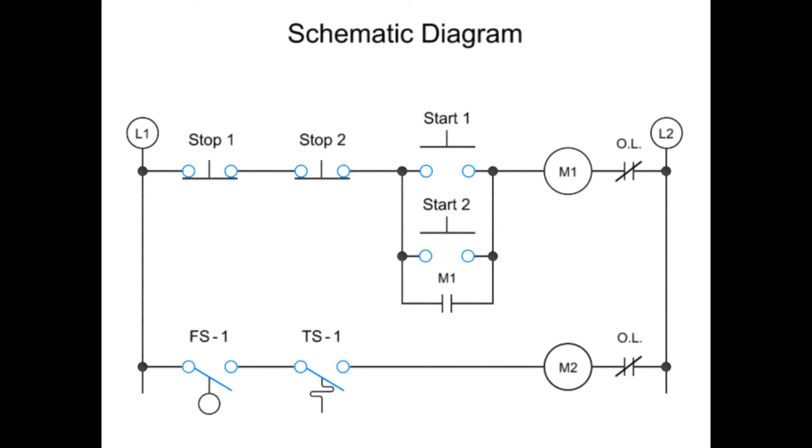Schematic diagrams with graphical symbols are used to show the electrical connections and functions of a specific circuit. This line, or ladder diagram, shows various electrical components interconnected by lines. These lines are arranged like rungs on a ladder.